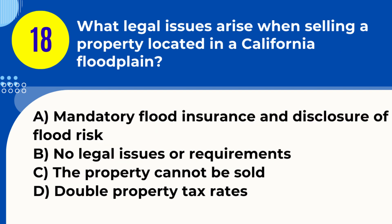Question 18. What legal issues arise when selling a property located in a California floodplain? A. Mandatory flood insurance and disclosure of flood risk. B. No legal issues or requirements. C. The property cannot be sold. D. Double property tax rates. Answer: A. Mandatory flood insurance and disclosure of flood risk. Explanation: Selling a property in a California floodplain involves disclosing the flood risk to potential buyers and the likely requirement for them to obtain flood insurance.